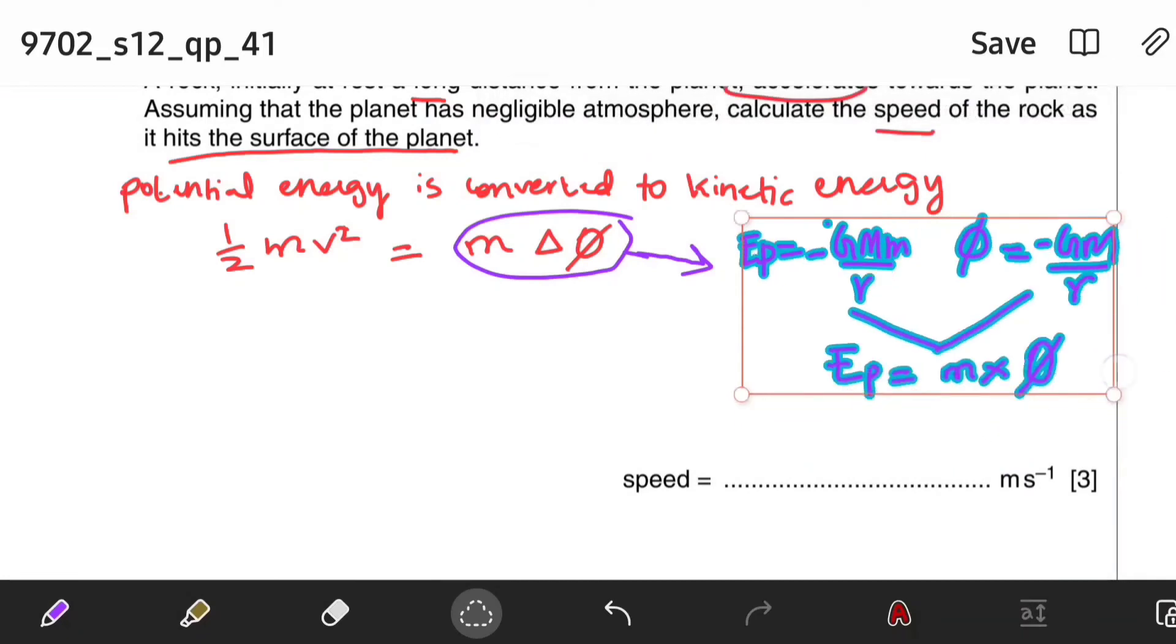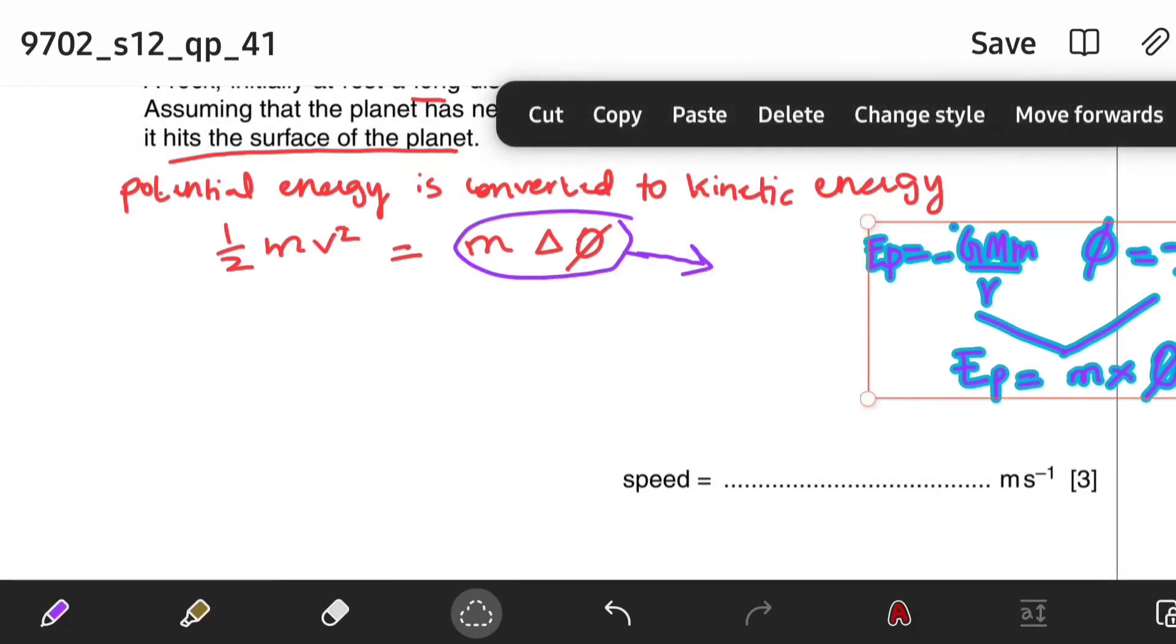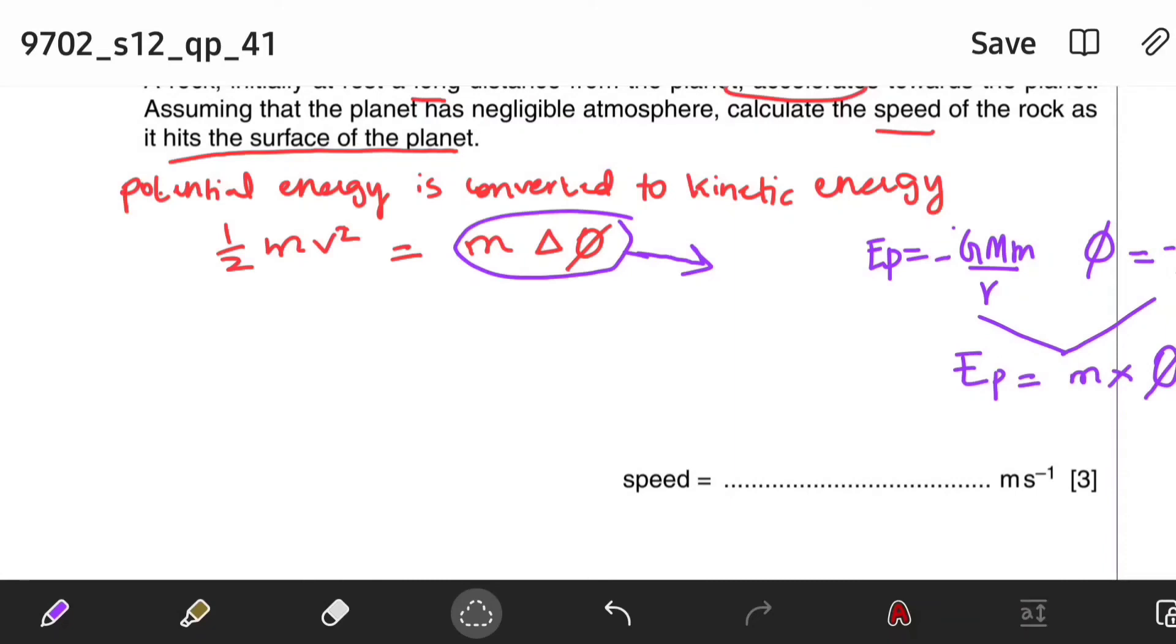So moving on, we need to find speed. This m gets canceled, and then we are left with ½v² equals change in gravitational potential. Now there's a formula that we wrote here for gravitational potential, and we are just going to substitute that. So v² = 2 × GM/r.